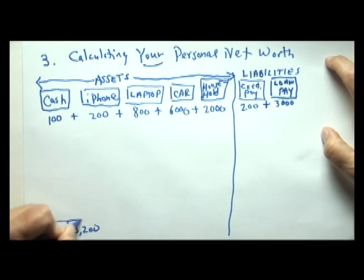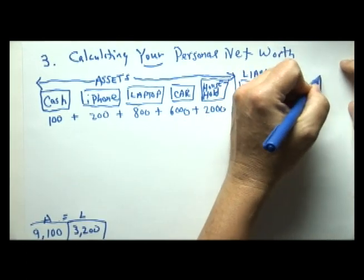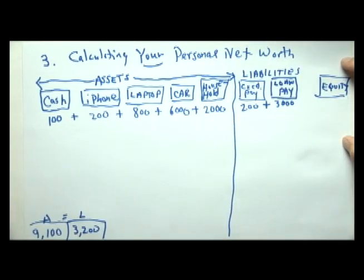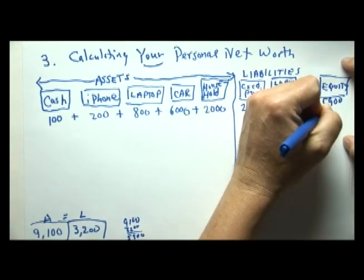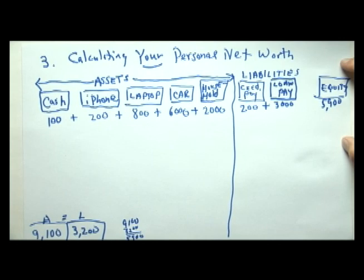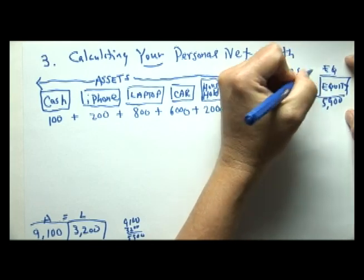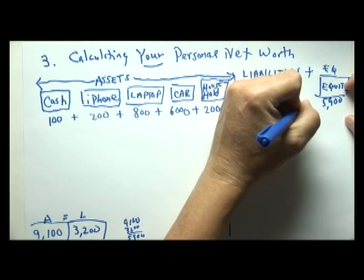If our assets are $9,100 and our liabilities are $3,200, we can infer that our equity is the difference: $9,100 minus $3,200 equals $5,900. And of course, equity plus liabilities must equal total assets — $200 plus $3,000 plus $5,900 equals $9,100, which checks out.